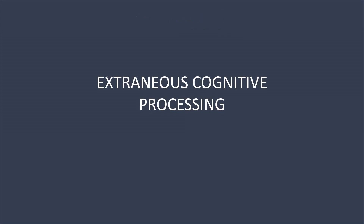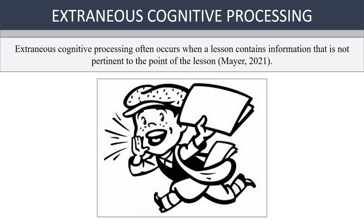So that was essential cognitive processing. Now let's take a quick look at extraneous cognitive processing. Unlike essential processing, extraneous cognitive processing often occurs when a lesson contains information that is not pertinent to the point of the lesson.